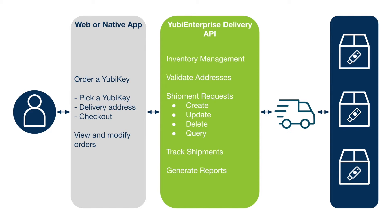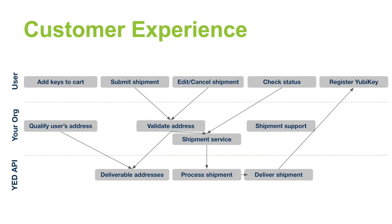An organization will typically have a service catalog where users can procure hardware and software. Behind the scenes, the YubiEnterprise Delivery Service handles all of the inventory management, address validation, shipment requests, tracking the shipments, generating reports, and delivering the keys to the user. In the typical user experience, they'll add their keys to the cart, put in their delivery address, check the tracking status, and then receive their YubiKeys shortly thereafter. From your organization's perspective, you can validate that those addresses are deliverable and then submit shipping requests to the YubiEnterprise Delivery API, which will process those shipment requests and deliver the keys to the user.